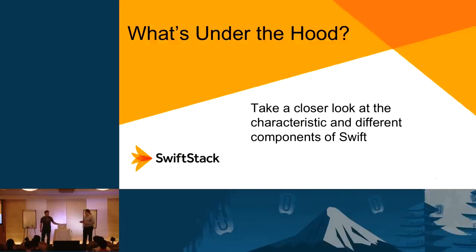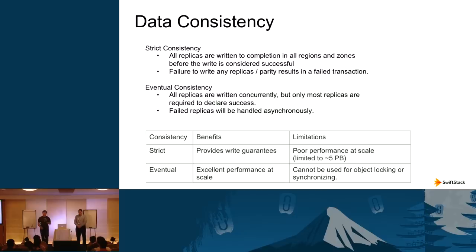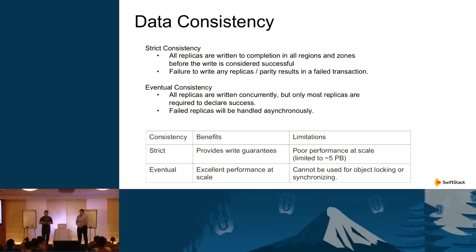Swift consists of four different pieces of service. First, let's talk about data consistency. Traditional storage systems are usually strictly consistent — when you write data to multiple locations, all locations must complete successfully for the write to be considered done. If there's an error in any one location, the entire write operation is considered failed. That's what block and file storage typically consists of.